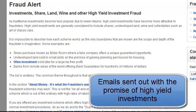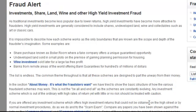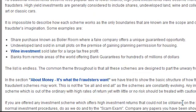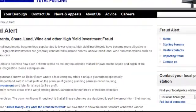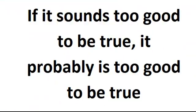Other examples of hoax emails include investment, share, land, wine, and high yield investment fraud. Emails are sent out with the offer of a share purchase known as a boiler room, where a fake company offers a unique guaranteed opportunity. Undeveloped land in small plots on the premise of gaining planning permission for housing. Wine investment sold later for a large tax-free profit. Banks from remote areas of the world offering bank guarantees for hundreds of millions of dollars. All these sorts of emails are known to the police and are scams. If it sounds too good to be true, it probably is too good to be true. Ignore them, get rid of them, bin them.